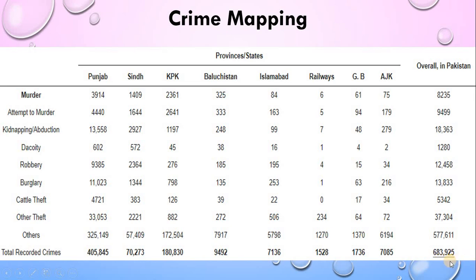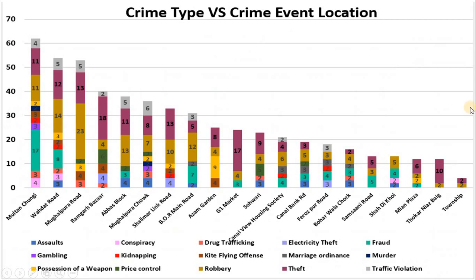The decision makers should take proper decisions and measures to stop it. Let's see the crime time versus crime event location — this is about Lahore. You can see in Multan Chungi it is occurring the most; the most one is number 11, which is about possession of a weapon.